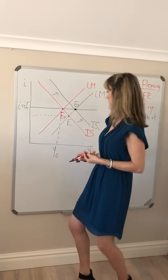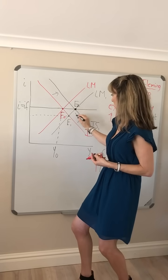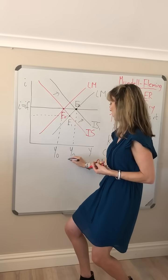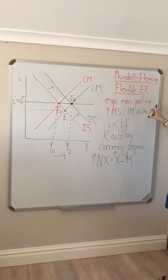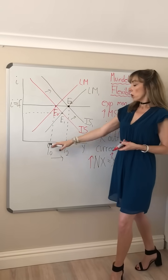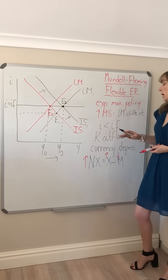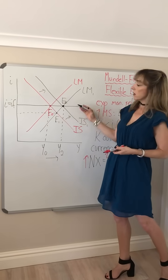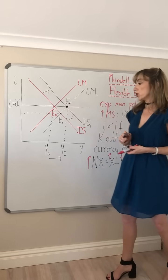Our income was initially Y0, and our income has now risen — we'll call this Y2. So we can see that our expansionary monetary policy has been highly effective. It has caused output to rise in the economy because it's been accompanied by this increase in net exports, which shifted the IS curve to the right.